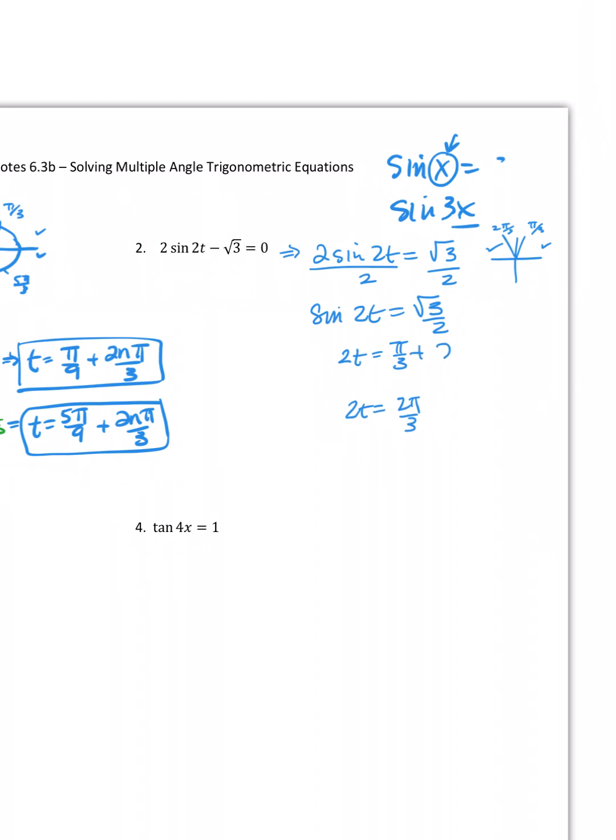And I need to keep into account the extra revolutions that are included in my solution. Then I need to get rid of the two. So I'm going to multiply both sides of my equation by one half to get rid of that two and solve for t.